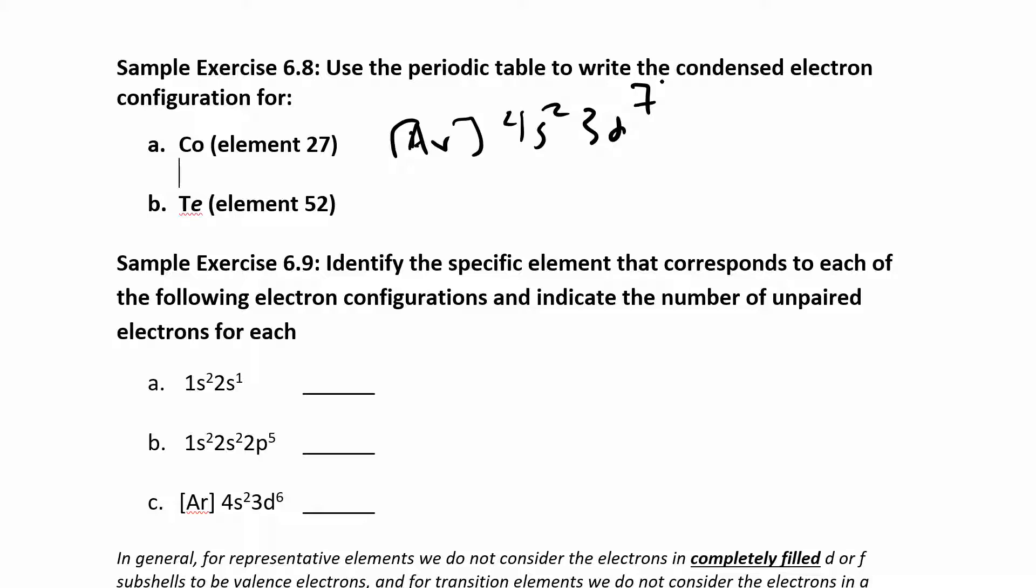That's the electron configuration. And the number of valence electrons are out here. We have nine. We have 7d and 2 on the s.